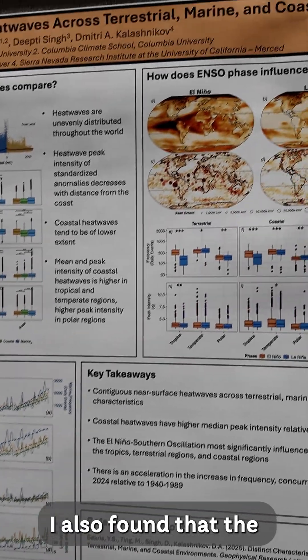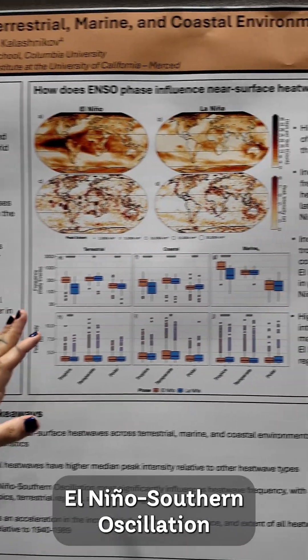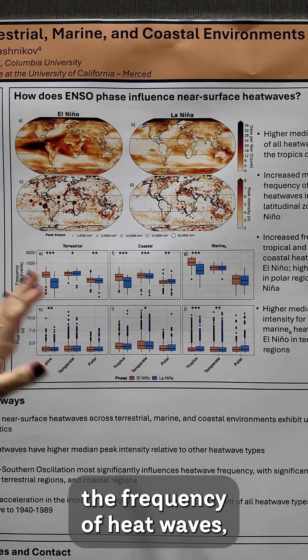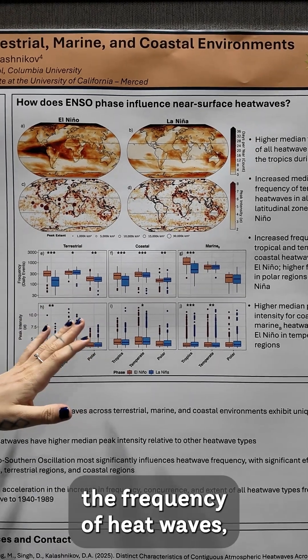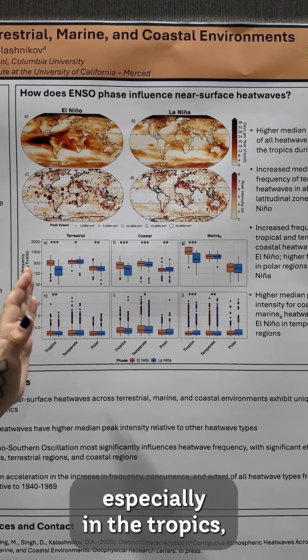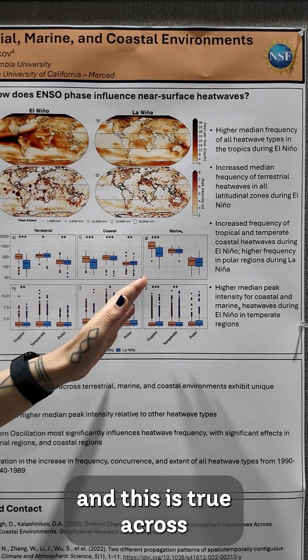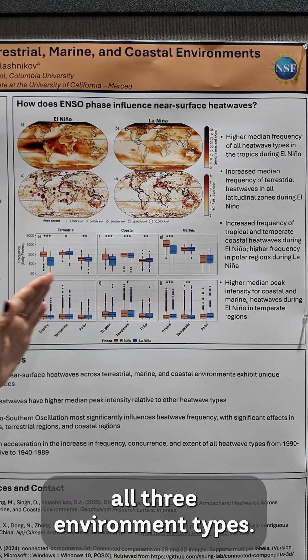I also found that the El Niño-Southern Oscillation strongly influences the frequency of heat waves, especially in the tropics, and this is true across all three environment types.